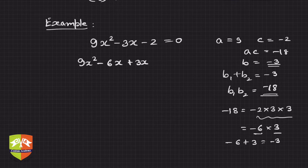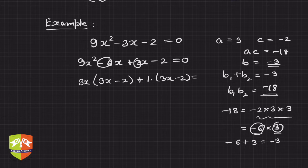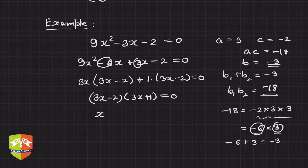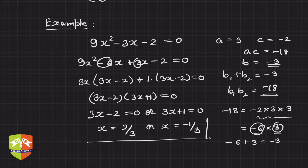So −3x is split as −6x + 3x, giving 9x² − 6x + 3x − 2 = 0. Taking 3x common from the first two terms gives 3x(3x − 2), and from the last two terms, 1(3x − 2) = 0. So (3x − 2)(3x + 1) = 0. Either 3x − 2 = 0 or 3x + 1 = 0, giving x = 2/3 or x = −1/3.